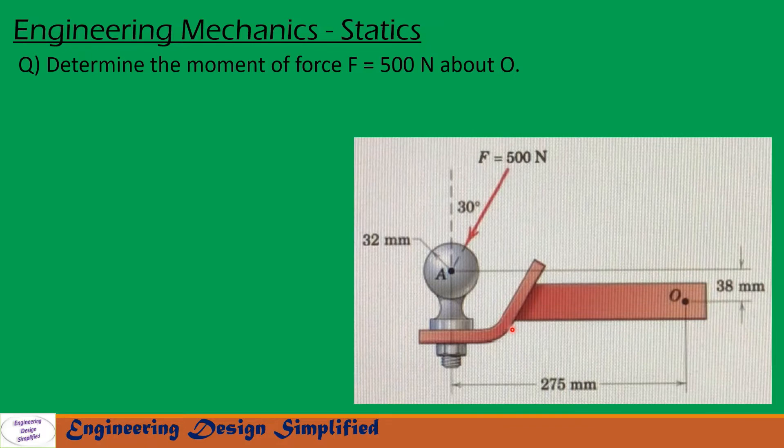In this problem, given is a hitch as shown in the figure. On the roller of the hitch, there is a 500 N force applied at an angle of 30 degrees from vertical. We need to find the moment of this force about point O.